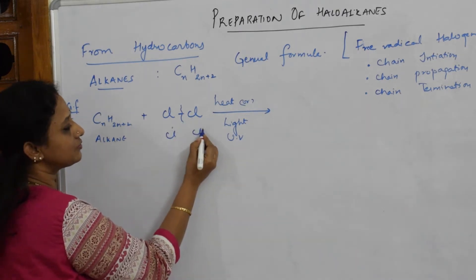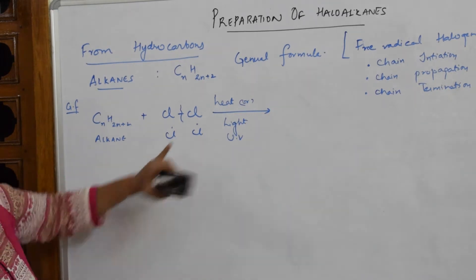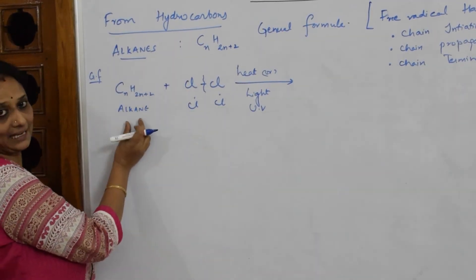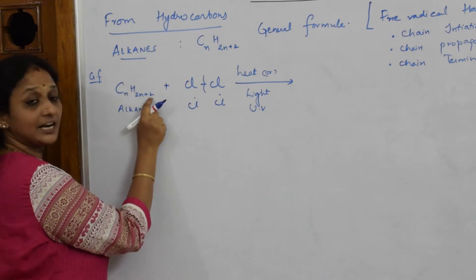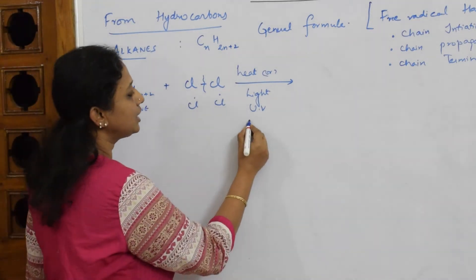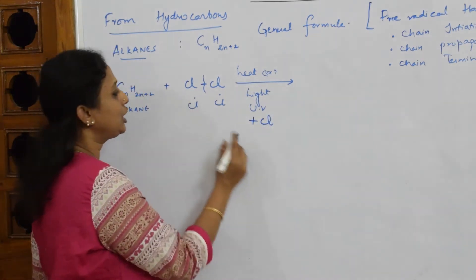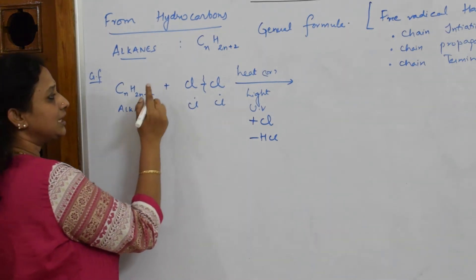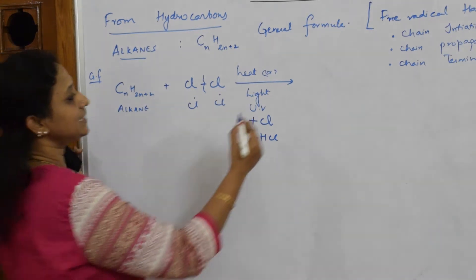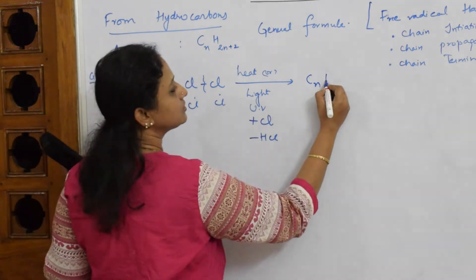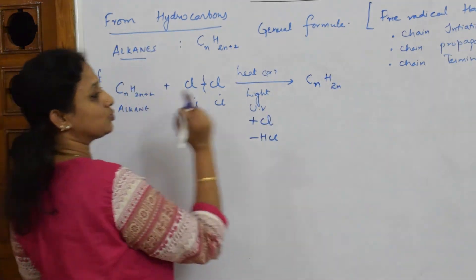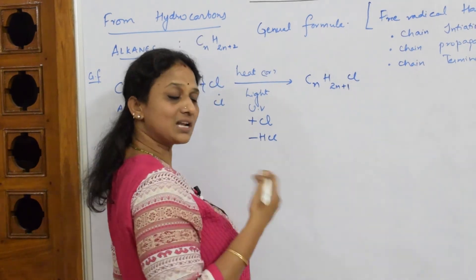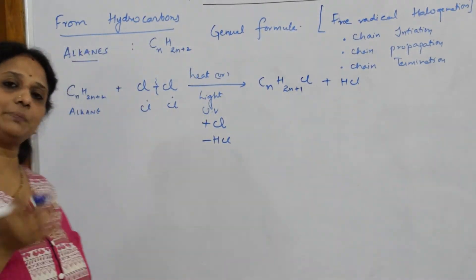Under heat or light, Cl₂ cleaves to form two chlorine free radicals. One Cl adds to the alkane, substituting one hydrogen. One Cl goes in and one hydrogen comes out as HCl. The resulting general formula becomes CₙH₂ₙ₊₁Cl, with HCl as a byproduct.